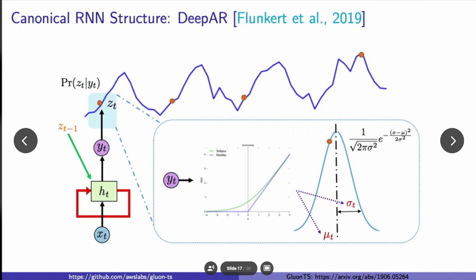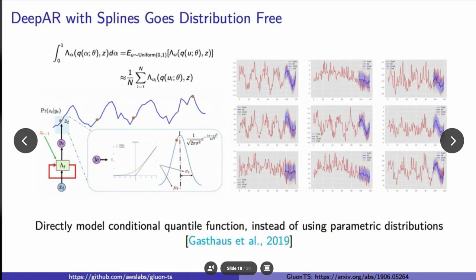Here you'll see DeepAR, we provided the reference for more information. We have a canonical network where we're taking one node to one hidden unit, and here Yt is going to be given by a parametric distribution. What we need to do is estimate the parameters of this parametric distribution. In this case, we have a Gaussian, so we need to learn the mean and standard deviation. You can also make DeepAR go distribution-free by utilizing splines. Here we can directly model the conditional quantile function instead of using parametric distributions.